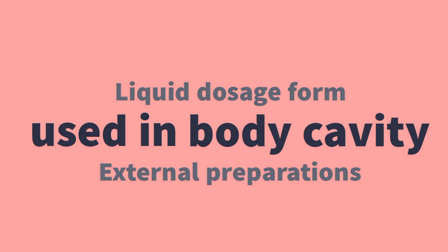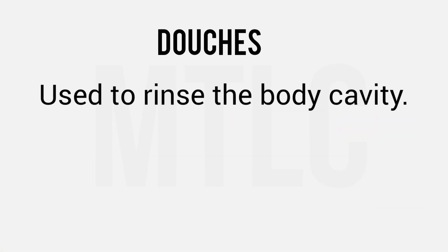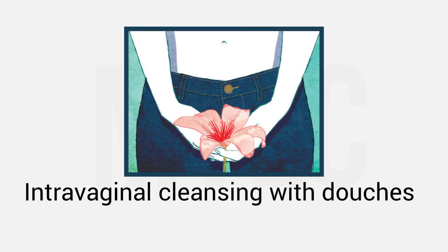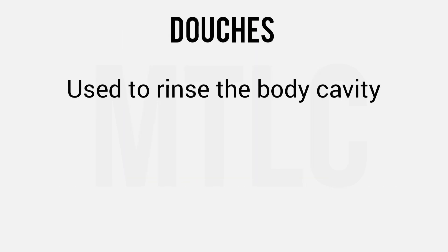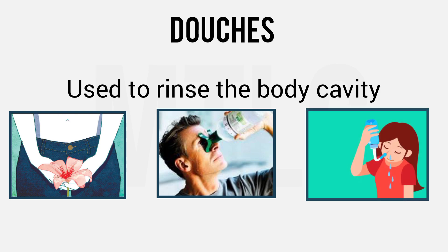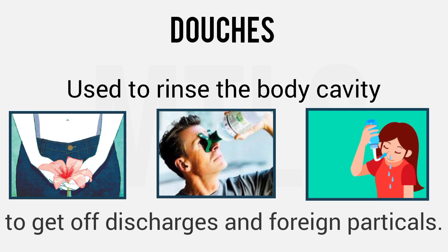The first formulation is Douches. Body cavity rinse — for a cleansing purpose. Mostly, Douches refer to a vaginal solution. That vaginal solution is used mostly, and that is called irrigation. Douches are not only for vaginal — eyes, ears, nose and all cavities. If any foreign particles or discharges, they will be cleaned or removed.